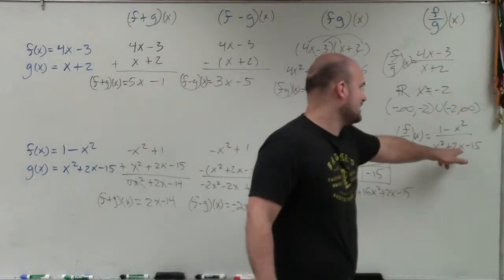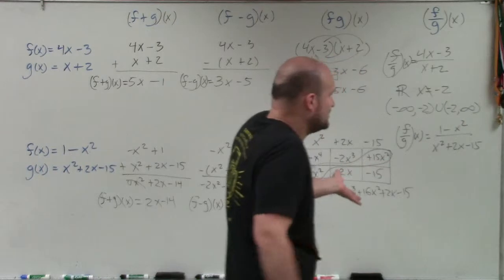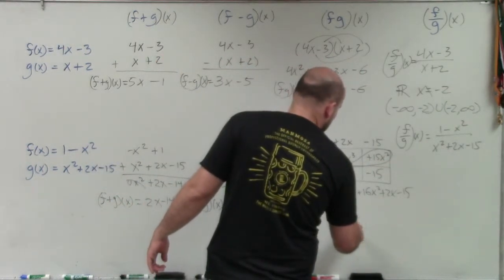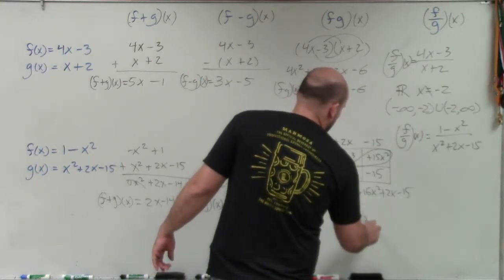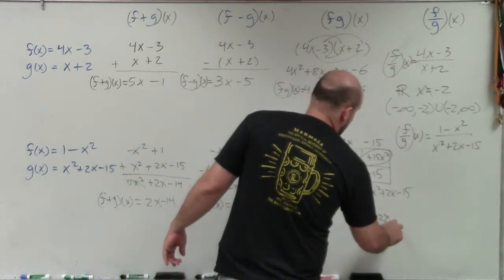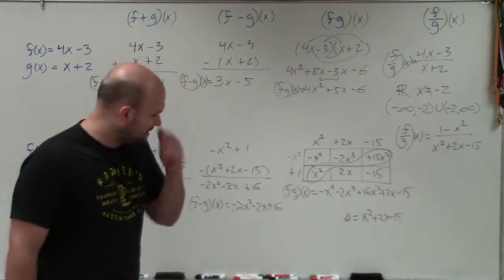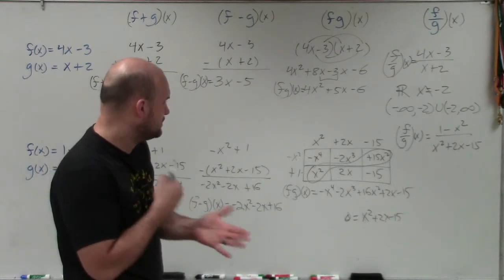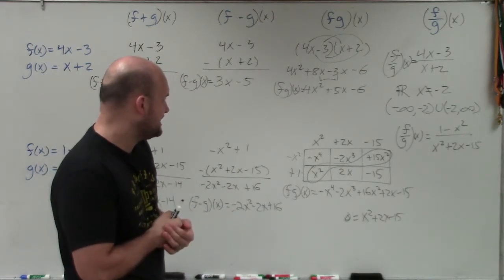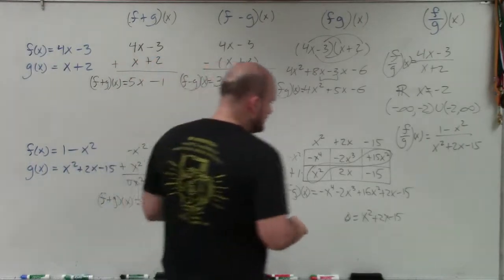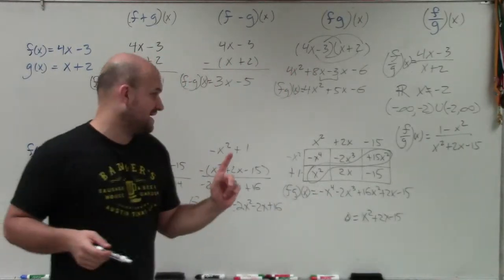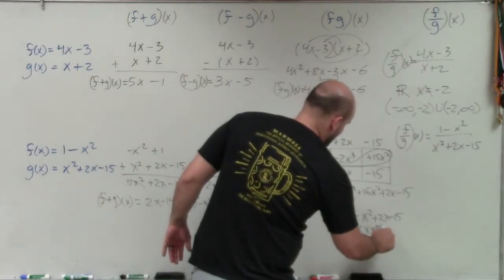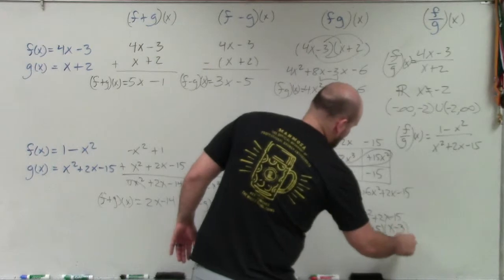So we look at this and we say, all right, can we factor this? Can we factor x squared plus 2x minus 15? And I think I have this factored. So if we set it equal to 0, x squared plus 2x minus 15. If we set that equal to 0, and then we go and factor, and we can say, what? That'd be 5x and negative 3x? Yes. Or 5 and negative 3. So that'd be x plus 5 times x minus 3.